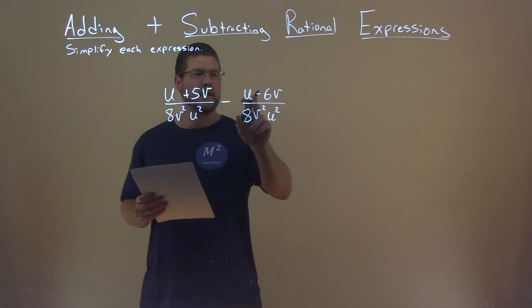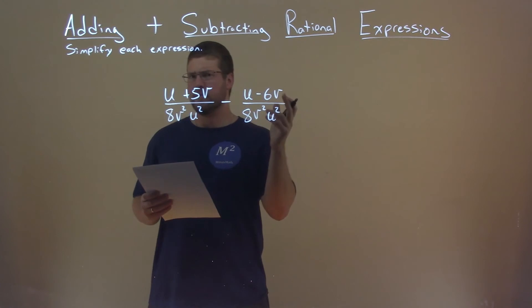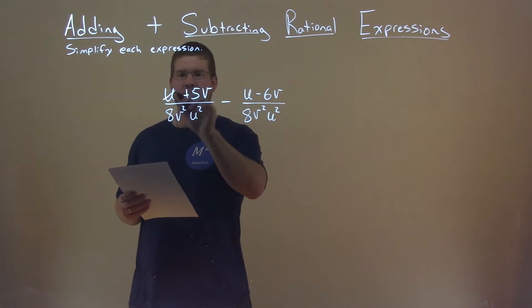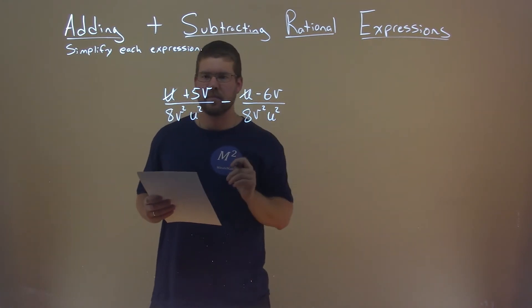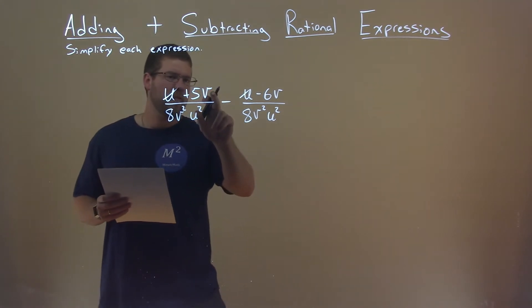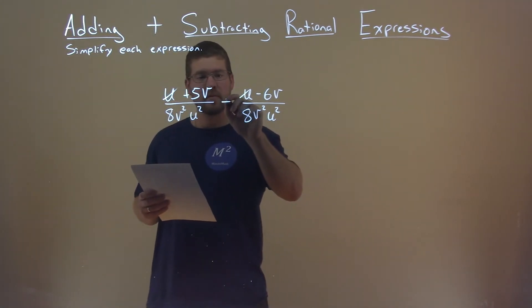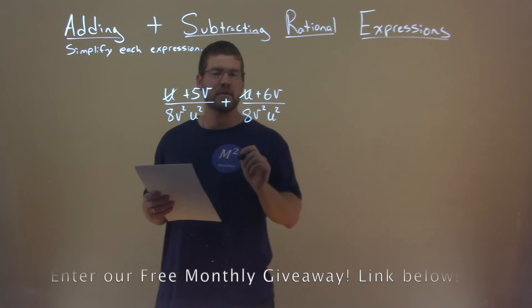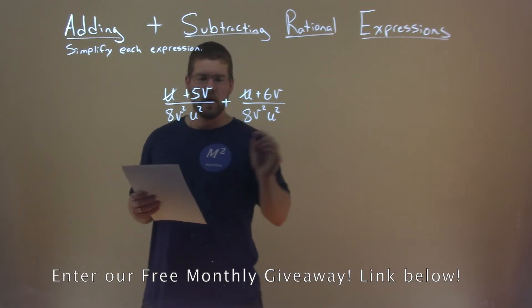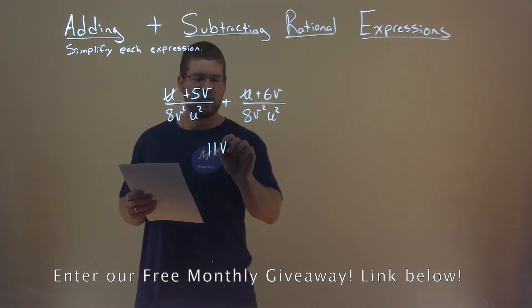We have u minus its like term u, which cancels, right? u minus u is 0. Next part, we have 5v minus a negative, minus a negative, right? It's plus a positive, 6v. So that comes out to be 11v here.